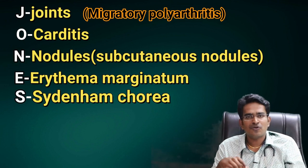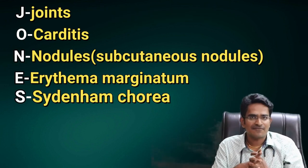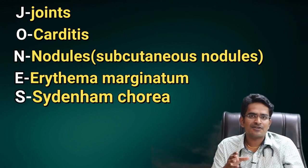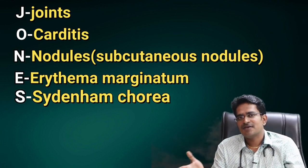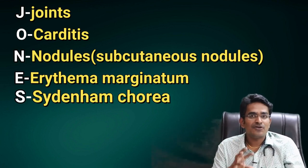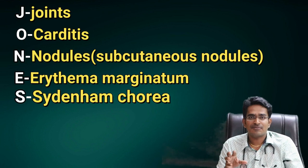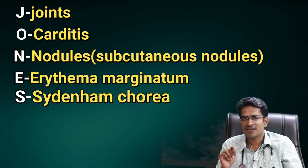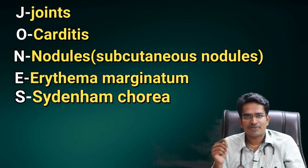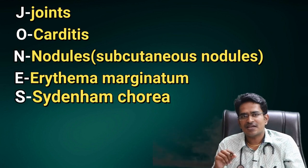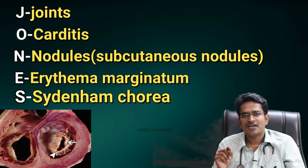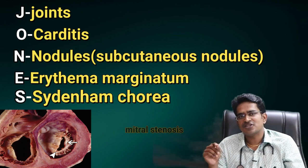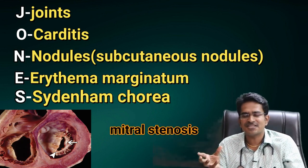The heart is also affected. There are three layers in the heart — the endocardium, myocardium, and pericardium. The endocardium is particularly affected, especially at the mitral and aortic valves. Inflammation leads to scar tissue formation in the valve walls.